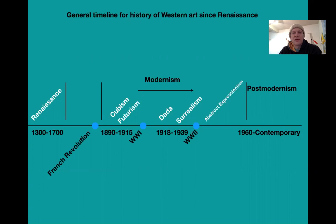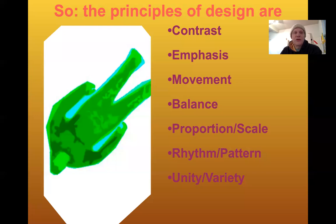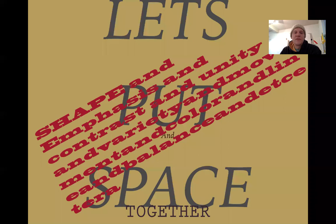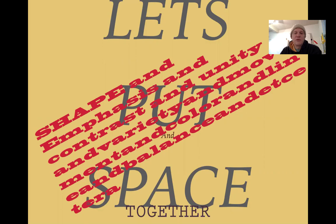Just to reiterate the principles of design: contrast, emphasis, movement, balance, proportion and scale, rhythm and pattern, and unity and variety. So let's put together space and all of these principles, and we'll get at something of visual organization.